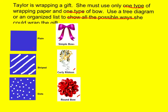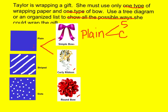We're going to start with the plain, and for a tree diagram I would write plain, and if I choose the simple bow I would just write S there. And then I could also choose a curly ribbon — so the plain wrapping paper with that curly ribbon — or I could choose the round bow. So that's what I did there.